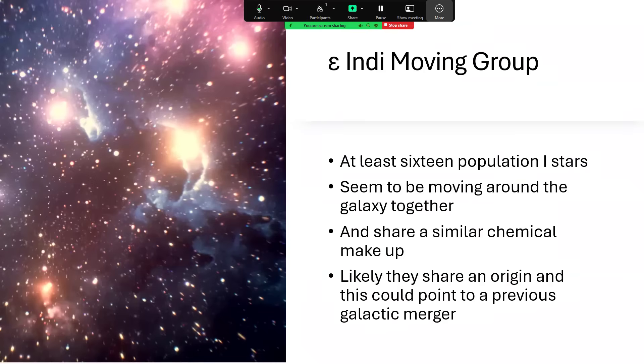Epsilon Indi seems to be moving around the galaxy with a whole group of 16 other Population I stars. Population I meaning that they are late formers, formed recently and consist of the more dirty chemical composition. These 16 stars seem to all be moving around the galaxy together, suggesting that they were formed together back in the day, and possibly pointing to some galactic merger or perhaps a star cluster that was boiled away and disrupted. That's still an active area of galactic archaeology to understand this Epsilon Indi moving group.